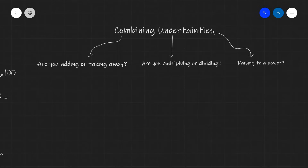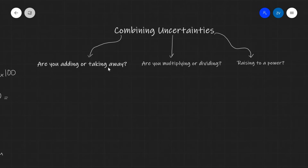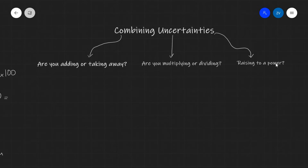When solving problems on combining uncertainties, the first question that we need to ask ourselves is what are we doing with the quantities? Are we adding them or taking them away? Are we multiplying or dividing? Or are we raising to a power? In some problems, we might be doing all three of them. Let's have a look at an example in each scenario.